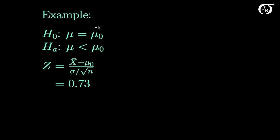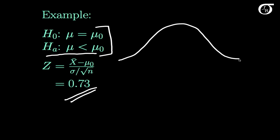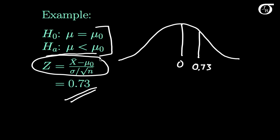Contrast that with this situation, where we are testing the null hypothesis that mu is equal to some value of interest to us, against the alternative that mu is actually less than that value. We carry out the test in much the same way and get a z-statistic of 0.73. Drawing our standard normal curve with 0 in the middle and 0.73 marked in — this test statistic has a standard normal distribution if the null hypothesis and the assumptions are true.